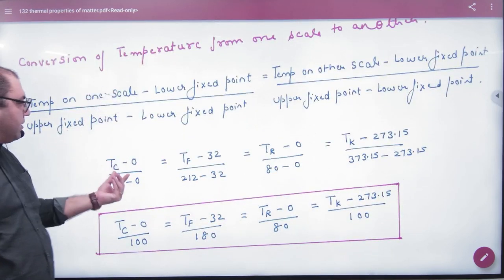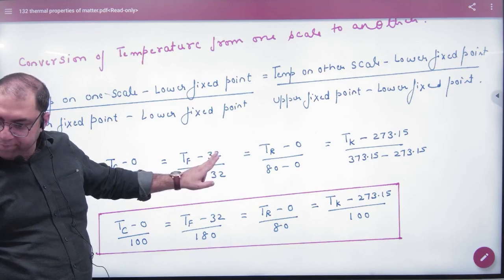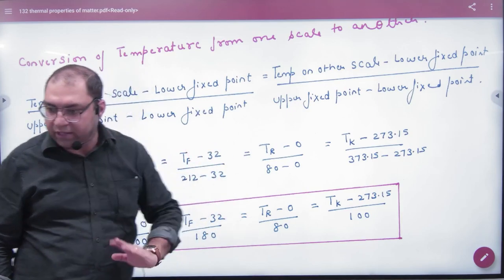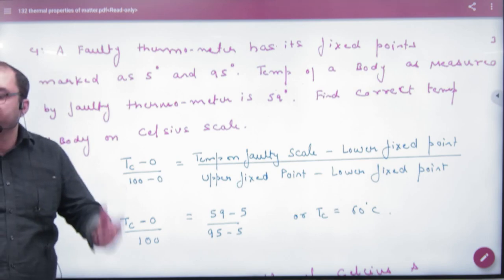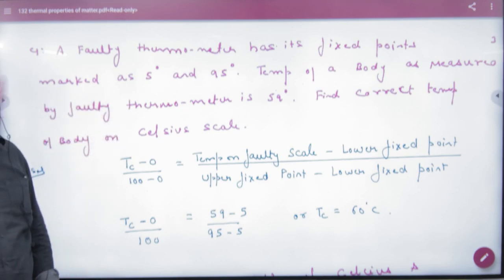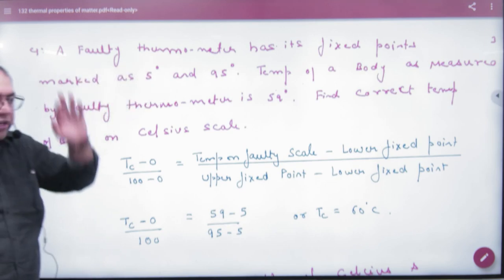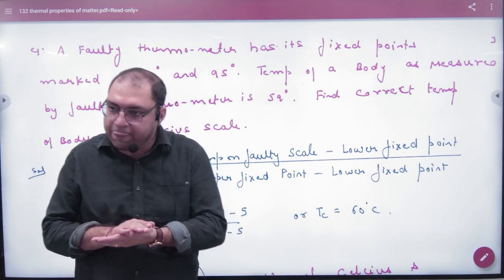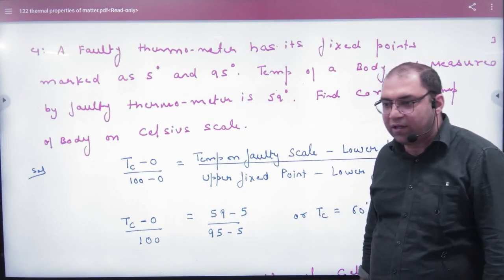Similarly, converting Celsius to Fahrenheit: lower fixed point in Fahrenheit is 32, upper is 212, difference is 180. Using the same formula, any new temperature scale can be converted. For example, a student has a faulty thermometer — called Shams thermometer — whose ice point is marked at 5 and steam point at 95. This thermometer reads 59 degrees.